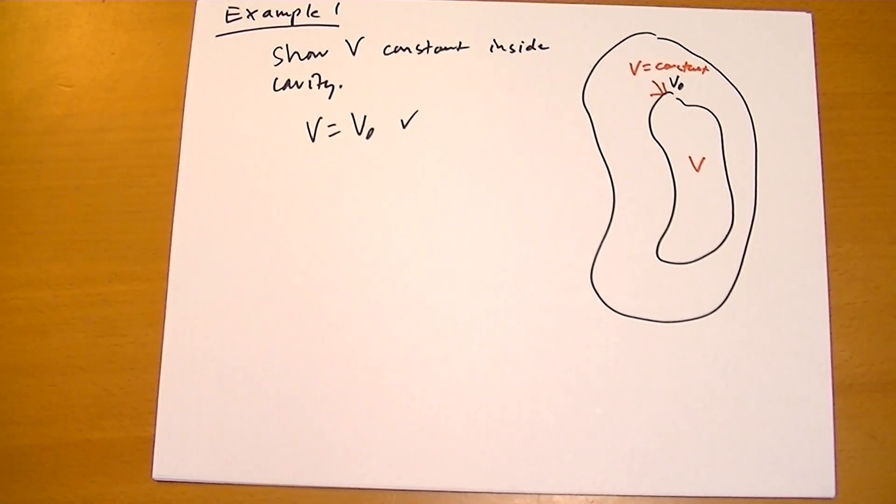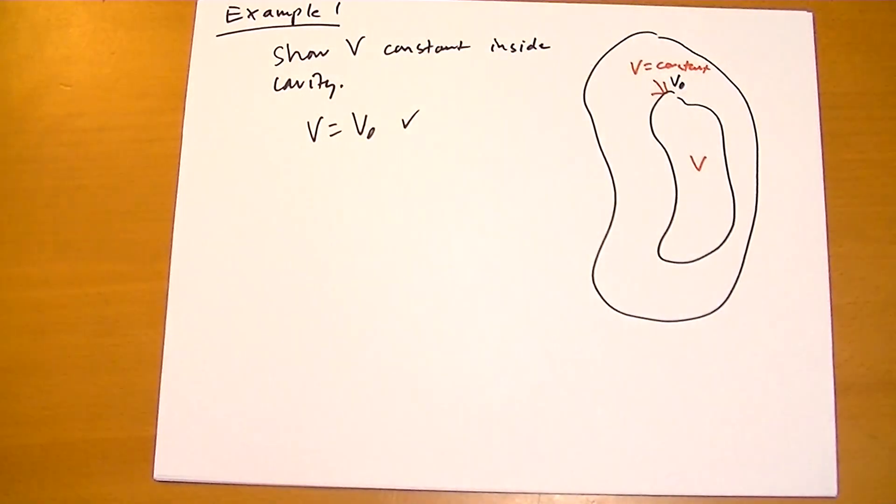Of course, you know that the electric field inside of the volume inside of a conductor is going to be zero. So obviously grad V is going to be zero as well. So grad V is zero, so obviously V has to be constant throughout that region.